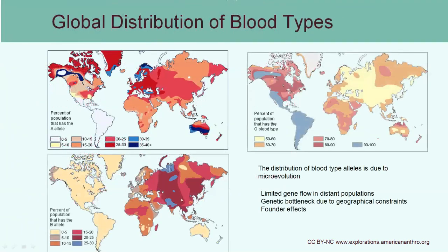This map shows blood types. The ABO blood group is controlled by genes for the A or B protein, and the distribution provides evidence of different migration patterns. Looking at the A allele specifically, as you move away from Africa toward northern climates, you find a higher and higher concentration of the A allele. You can still see a gradation, which is evidence that gene flow is still happening amongst these populations, but the further the geographical distance, the more challenging it is for those groups to interbreed, resulting in a concentration of the A allele in the northern area.